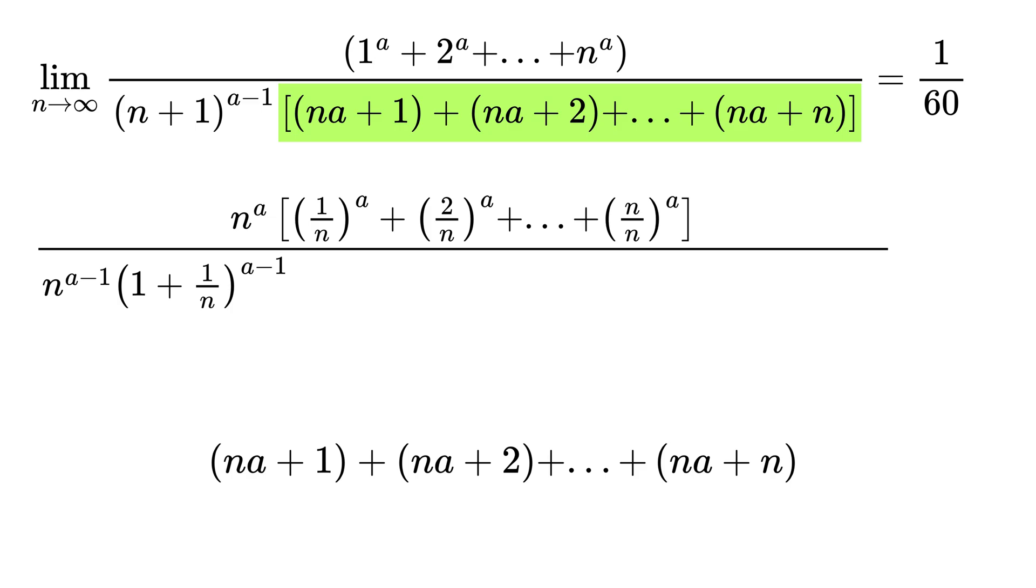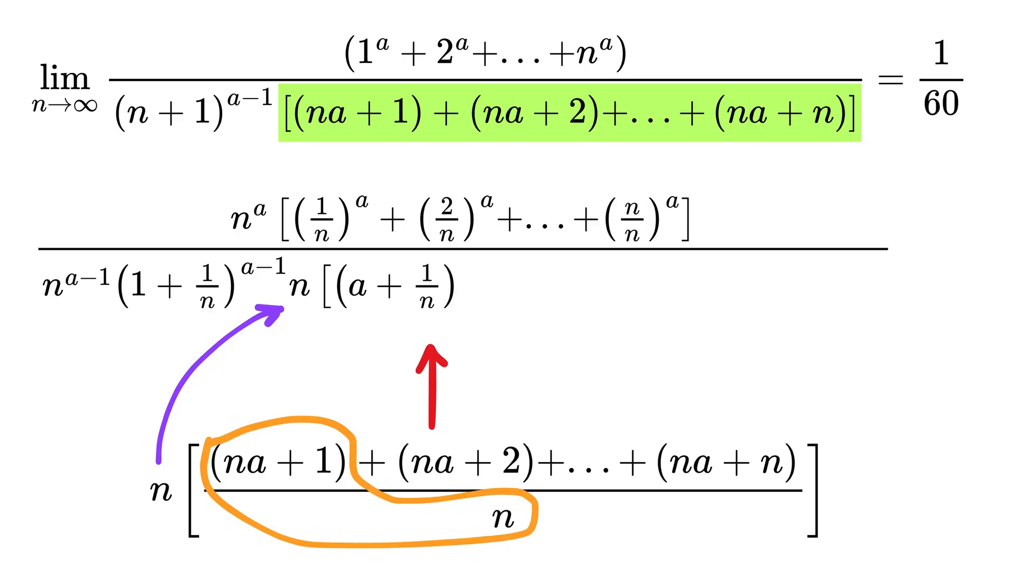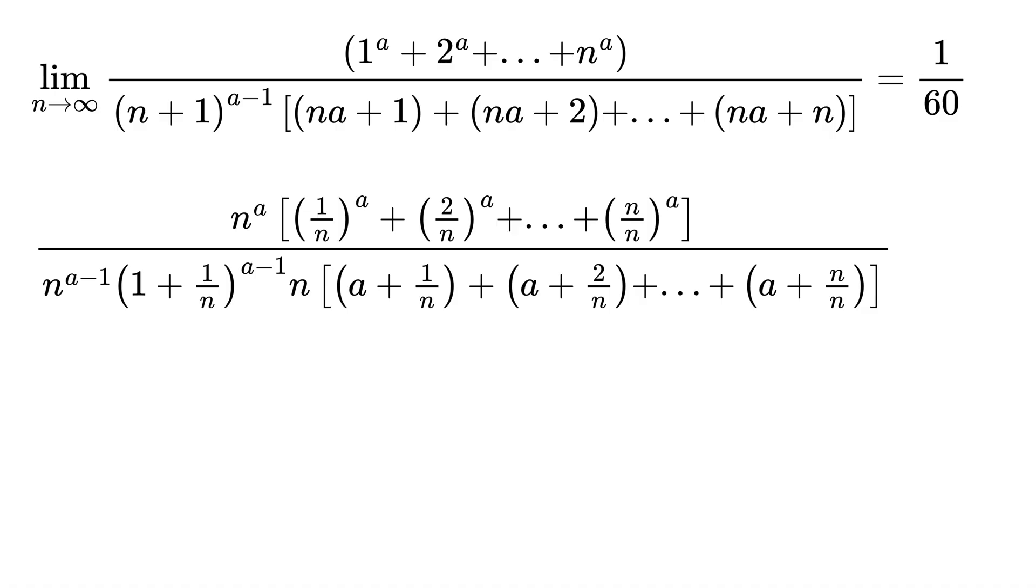Now consider this part of the denominator. Multiply and divide by n on both sides to get this. So we get this as n times: this will be a plus 1 over n, then this will be a plus 2 over n, and so on till a plus n over n.